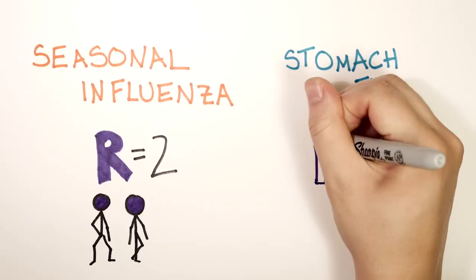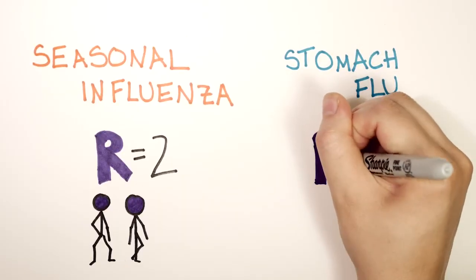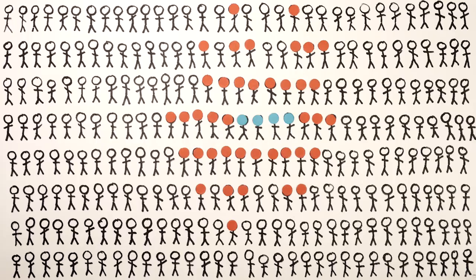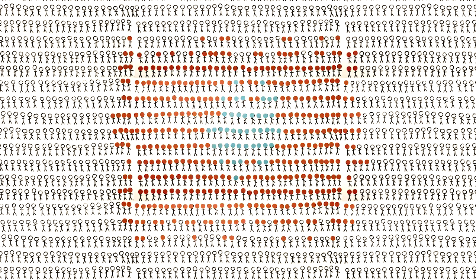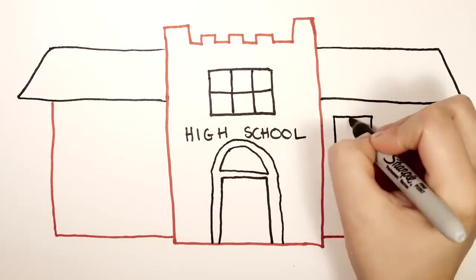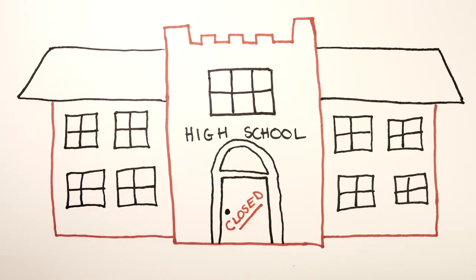On the other hand, stomach flu, which is usually caused by the norovirus, can have an R-value as high as 10. After two rounds of infection, 444 people will have been infected. It's so infectious that the only way to prevent it spreading is to shut the whole school down.